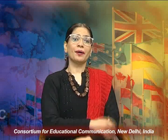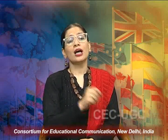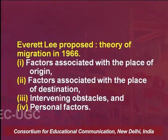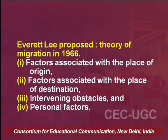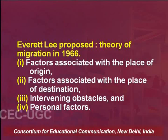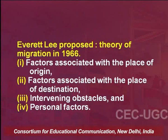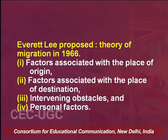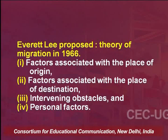An important perspective on human migration comes from Everett Lee, who proposed a theory of migration in 1966. His framework focuses on four aspects: first, factors associated with the place of origin; second, factors associated with the place of destination; third, intervening obstacles; and fourth, personal factors.